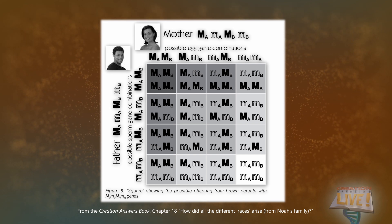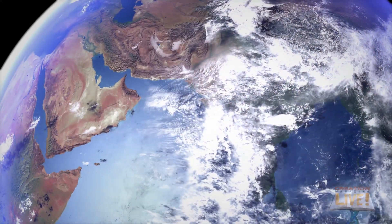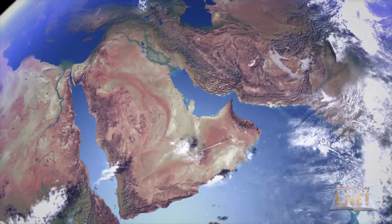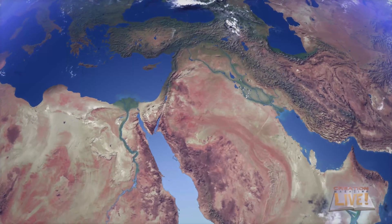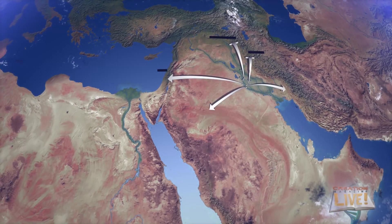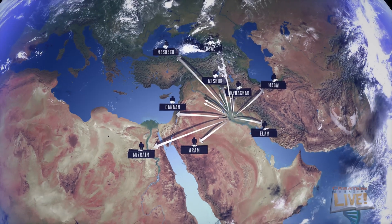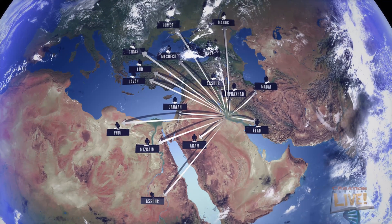Adam and Eve likely had at least this many variations available in their DNA, and probably Noah's family as well. Noah's descendants all stayed in the same area, around the Tower of Babel, refusing to fill the earth as God had commanded. The confusion of languages and the dispersion of people from Babel is a key to understanding the distribution of skin shades globally.